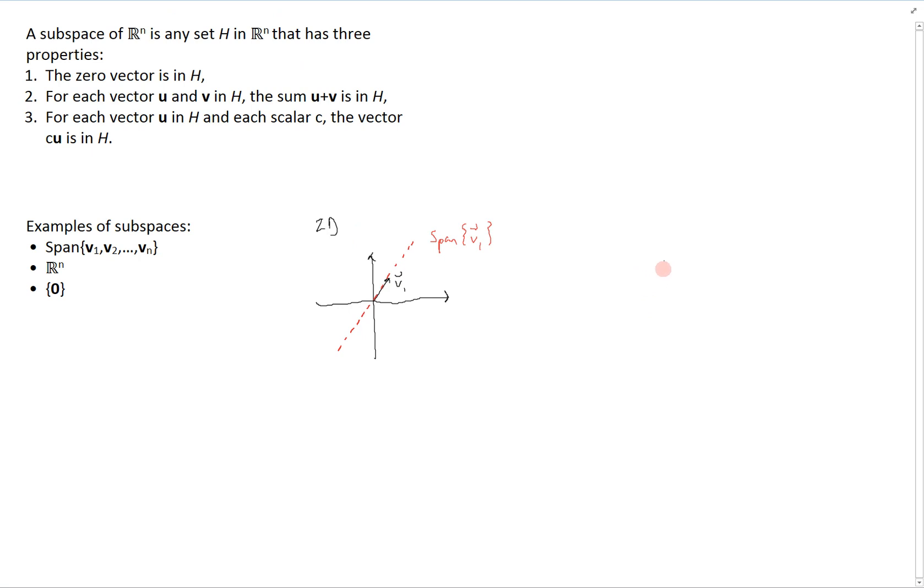We can see another example. Suppose we have a vector v1 and a vector that is linearly dependent with it, v2. Then the subspace spanned by these two vectors is still a line in R^2. This is the span of v1 and v2 since they're linearly dependent.